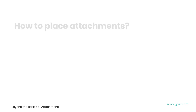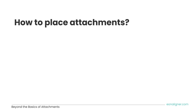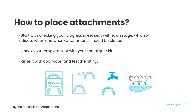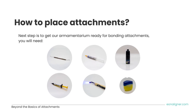Now, after discussing all the theory behind attachments, let's move to clinical tips on how to place attachments. Start by checking your stage progress sheet, which comes with the aligner kit — this indicates when and where attachments should be placed. Check your template sent with your EON aligner kit, rinse it with cold water, and test the fitting. Next, get your armamentarium ready: dental explorer, etching gel, bond, composite material, light cure, and optional isolating material or petroleum jelly.